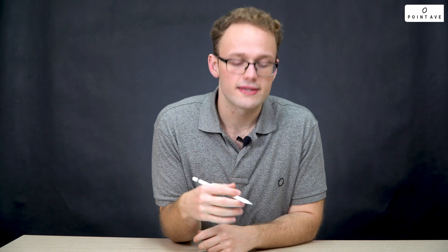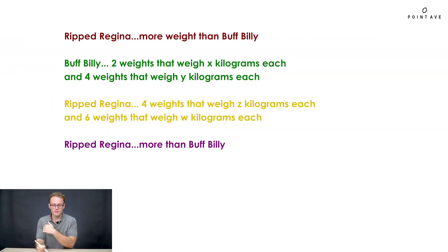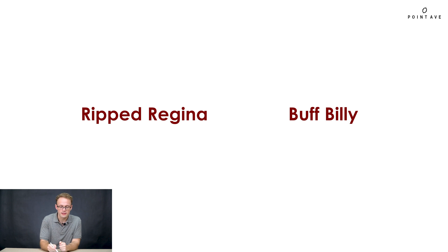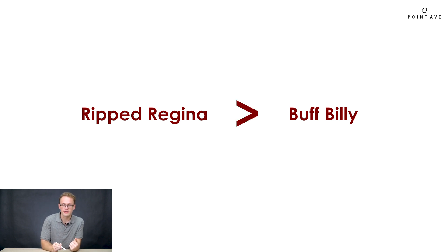Let's look at our first and last phrases. Both tell us we need to make an inequality relating how much weight Regina can lift to how much weight Billy can lift. Specifically, it tells us that Regina can lift more weight than Billy. To express that using an inequality, we show that Regina's weight is greater than Billy's weight. Now we need to find each of their weights so we can plug into our inequality.